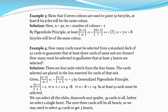How many cards must be selected from a standard deck of 52 cards to guarantee that at least 3 cards of the same suit are chosen? The 4 suits form 4 boxes, and the cards selected are placed in the box reserved for cards of that suit. By the Generalized Pigeon Hole Principle, floor of (N-1)/m plus 1 equals floor of (N-1)/4 plus 1, which equals 3, because at least 3 cards of the same suit are selected.